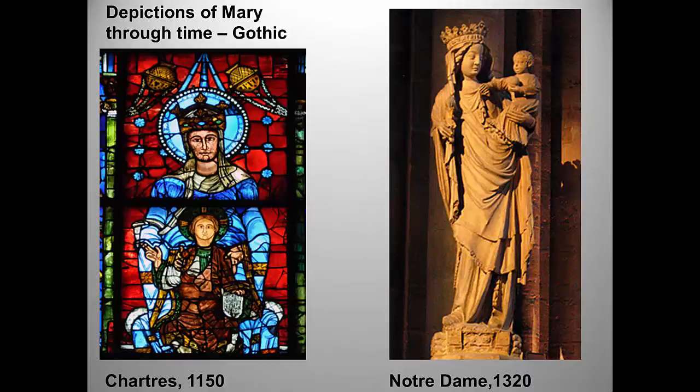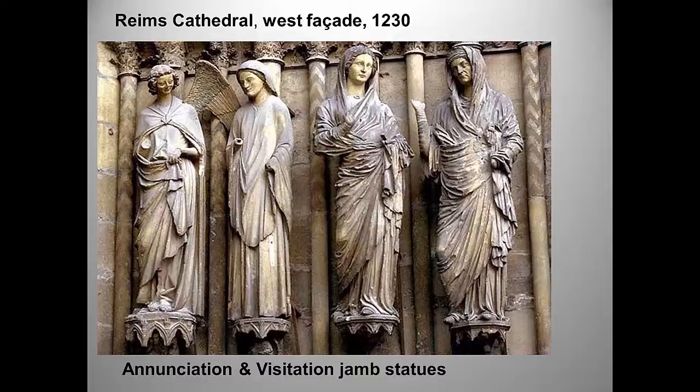We're also seeing a return in the statue on the right to classical styles of sculpture. Note the contrapposto and the way Mary's weight shifts to hold her baby. The draperies too reflect a classical style. These statues were carved by different workshops — Mary and the angel on the right, the Annunciation, are wearing medieval courtly garb, while the figures on the left are wearing classical drapery. Note that not only the clothes but also the contrapposto and modeling hearken back to classical models. The Renaissance is coming.